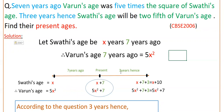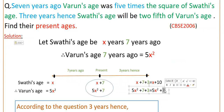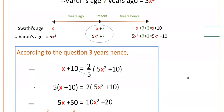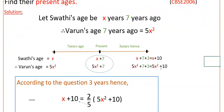Now, 3 years hence — meaning after 3 years — you add 3 years to the present ages. So Swathi's age 3 years hence will be X plus 7 plus 3, that is X plus 10 years. And Varun's age after 3 years will be 5X squared plus 7 plus 3, that is 5X squared plus 10.